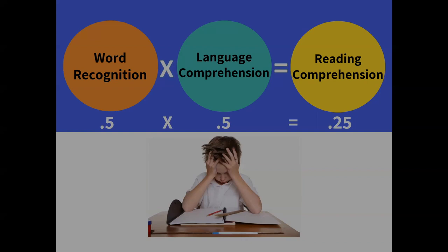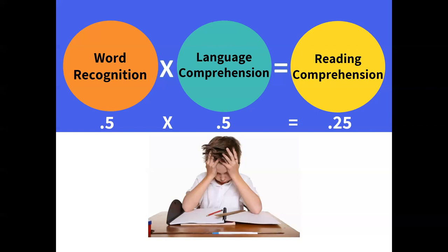Now let's take a look at this frustrated student who has deficits in both word recognition and language comprehension. This is actually the most common scenario — students struggle in both components, perhaps more with word recognition and slightly with language comprehension. When they have deficits in both sides, it greatly impacts the product. This is not a sum of the parts — the multiplication problem really shows us how those two components affect reading comprehension.